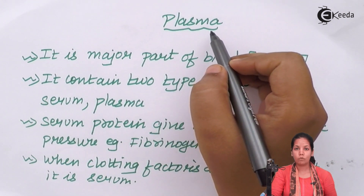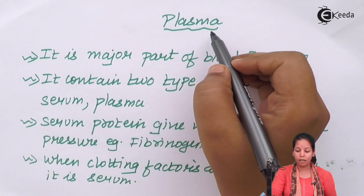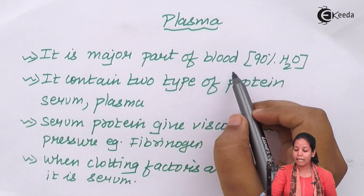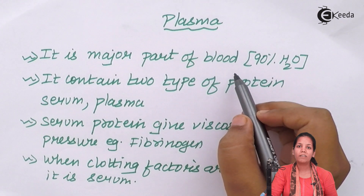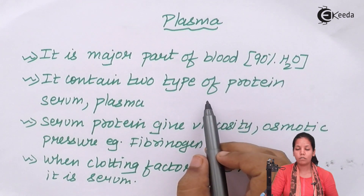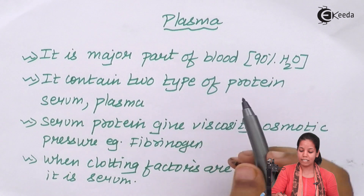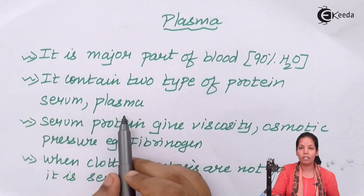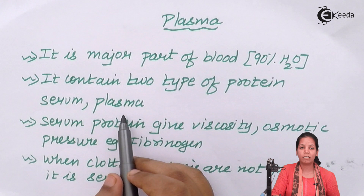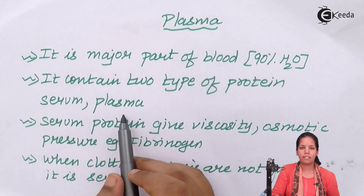Plasma accounts for 50 percent of total blood — the major part — and 90 percent of it is pure water. It has two different kinds of proteins: serum proteins and plasma proteins.